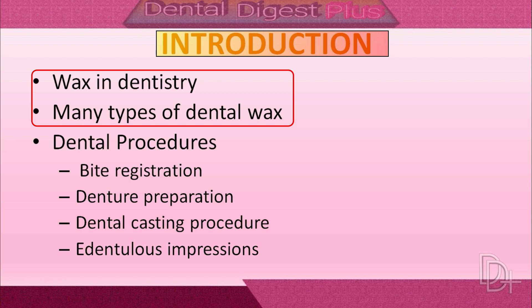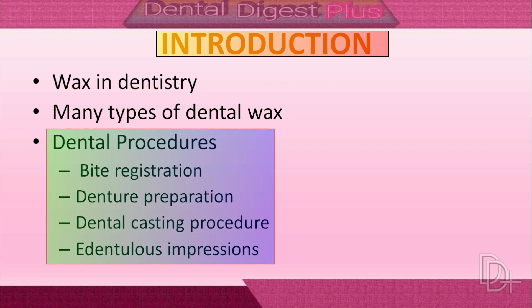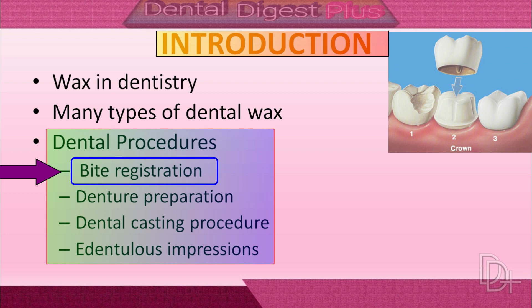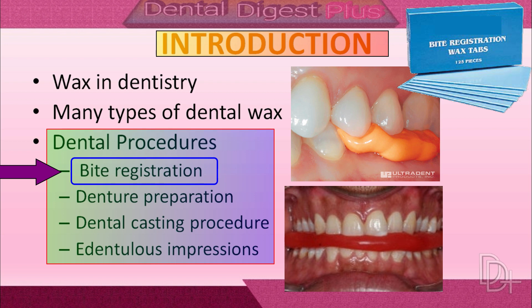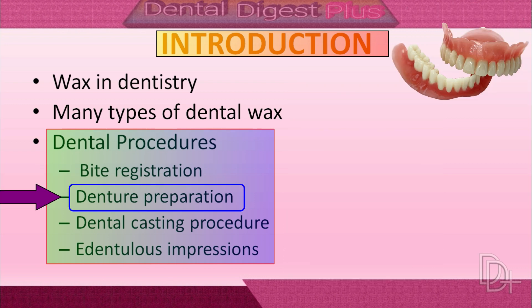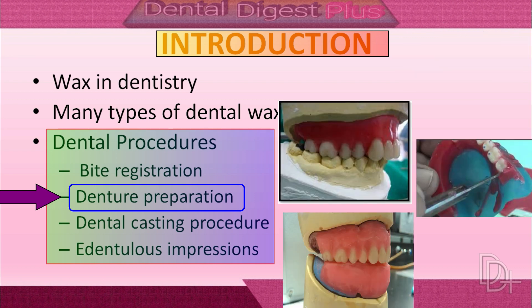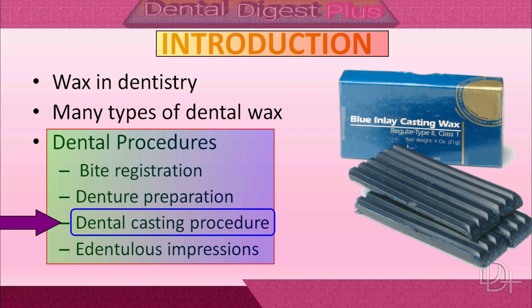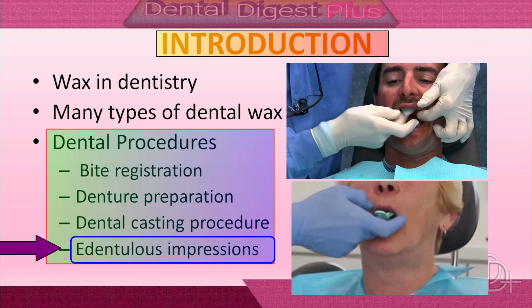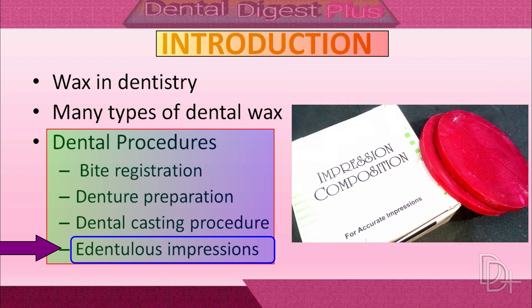Waxes are used widely in dentistry. Many varieties of natural waxes and resins have been used for specific and well-defined applications. Many dental procedures involve wax-containing materials at some stage. For example, when making a ceramic tooth crown we take bite registration using bite registration wax. During preparation of dentures, the setting up of artificial teeth is done with modeling wax, and in dental casting procedures inlay wax and casting wax are used. Also, dental impressions may be recorded in a wax-containing material called impression compound.